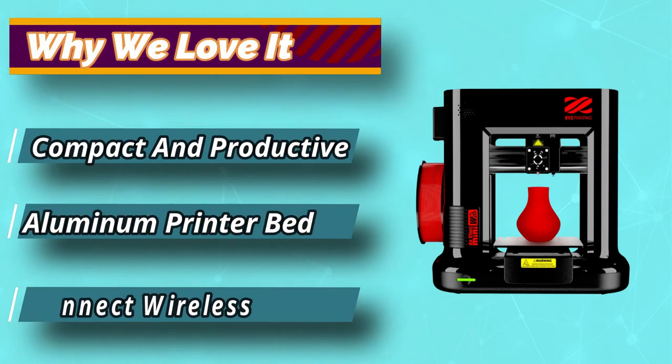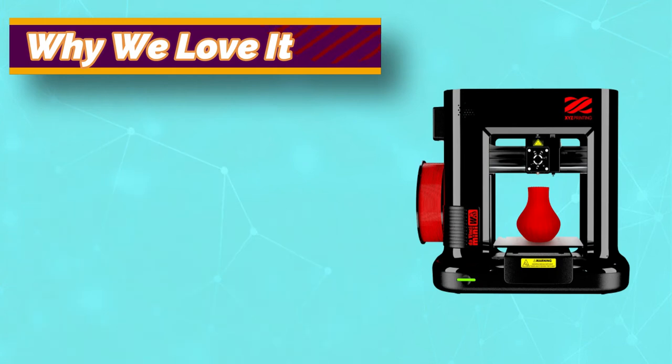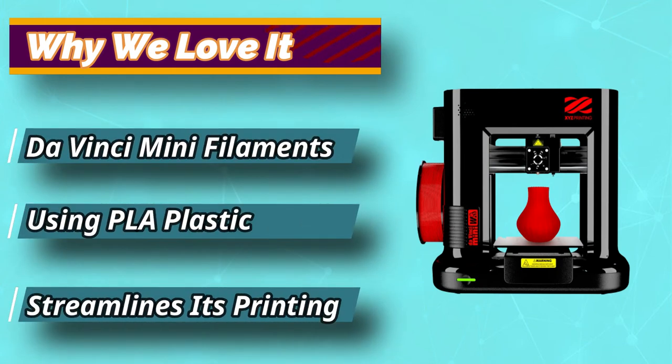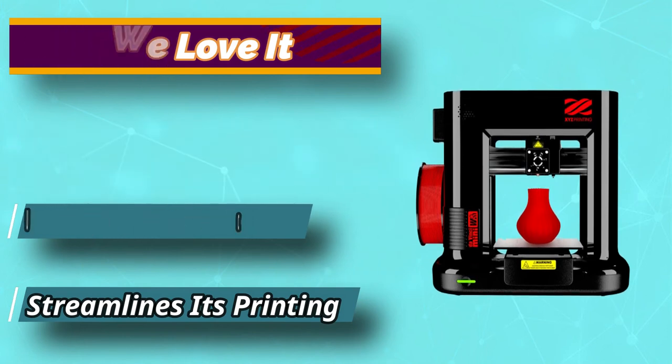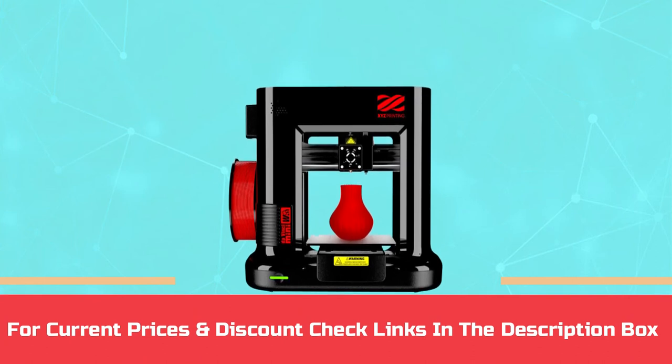Colorful Design: The Da Vinci 3D printers come in various colors: green, blue, yellow, red, and orange. The colorful case covers the printers working, exposing the hot protrusion and hotbed. For current prices and discount, check links in the description box.